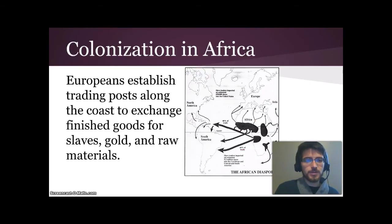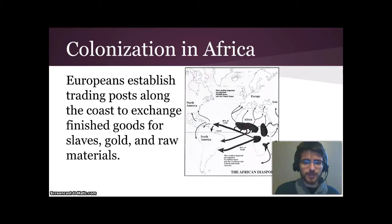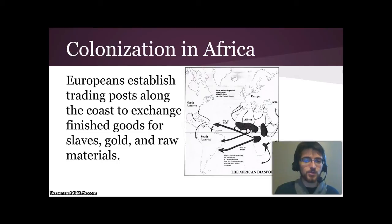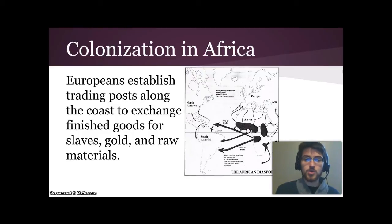In Africa it was different. Europeans established trading posts along the coast to exchange finished goods for slaves, gold, and raw materials, but they weren't able to conquer very effectively. Diseases in Africa killed many Europeans, and Europeans didn't yet have great enough firearm technology, so they could hold coastlines but couldn't penetrate much further. Africans held their own but did trade slaves to the Europeans, who then brought them across the horrible Middle Passage into North and South America to work on plantations.